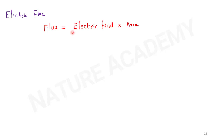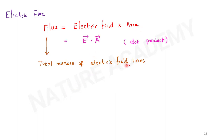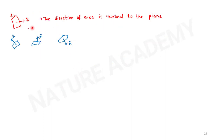Now we discuss electric flux. Flux equals the electric field multiplied by the area, and represents the total number of electric field lines. The electric field is E-bar and the area vector is A-bar; their dot product gives the flux. For a closed surface, the total flux is the integral of E-bar dot dS-bar. The direction of the area element is normal to the surface — if the surface element is in the xy-plane, its direction (n-cap) is perpendicular to that plane.